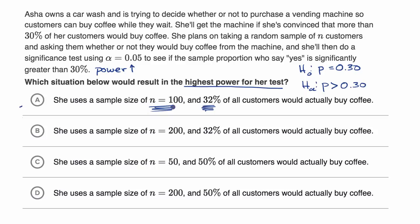But the general principle is, the higher the sample size, the higher the power. So you want the highest possible sample size. And you're going to have a higher power if the true proportion is further from your hypothesis, your null hypothesis proportion.